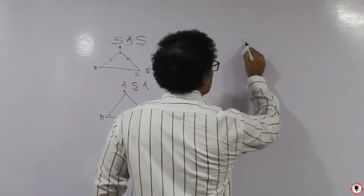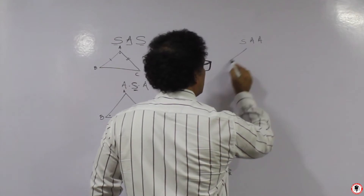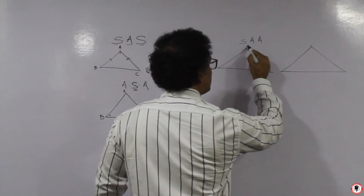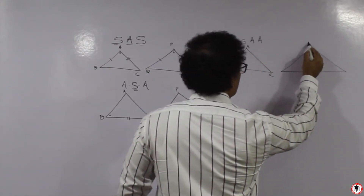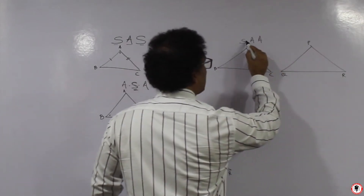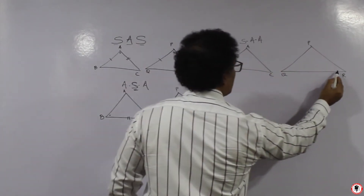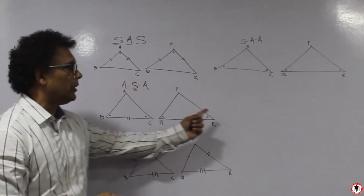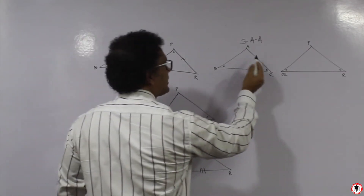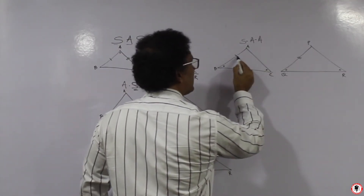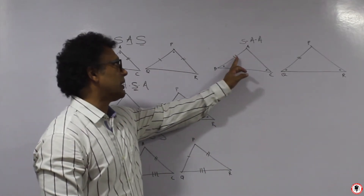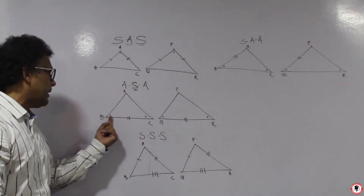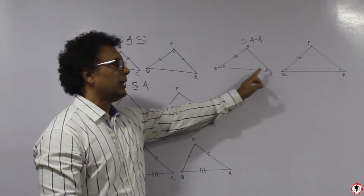The next test is SAA — Side-Angle-Angle. With triangle ABC and triangle PQR, if two angles are congruent, the side is not the included side between the angles — it is somewhere else. If that side and its corresponding side are congruent, then the combination gives us SAA. If two angles are there and the side is between the angles, then it is ASA; otherwise it is the SAA test.